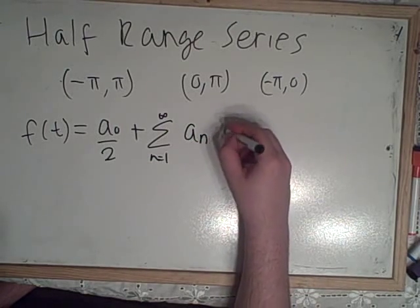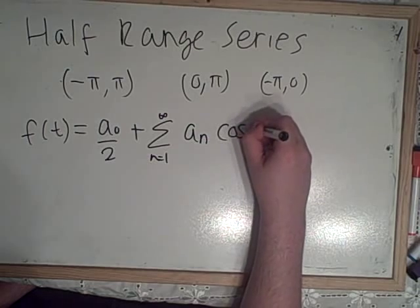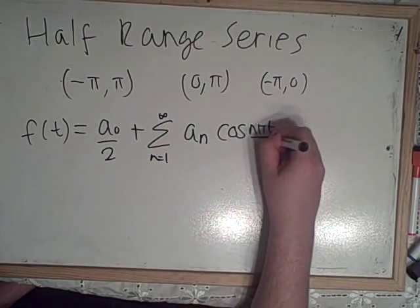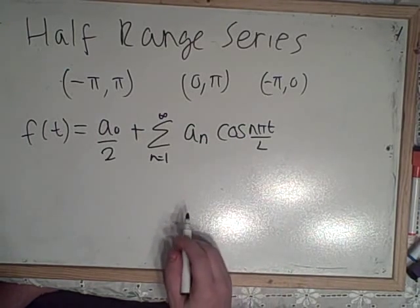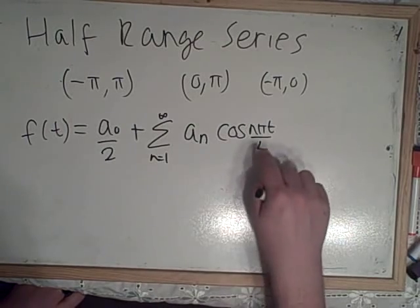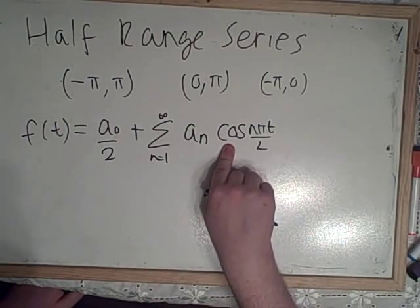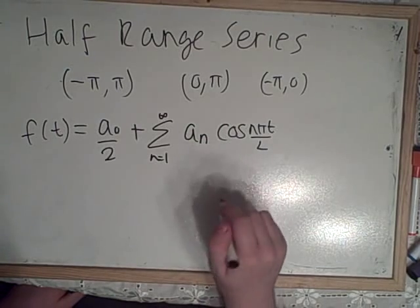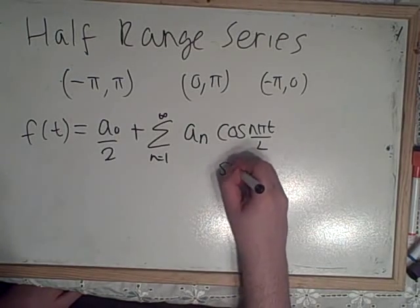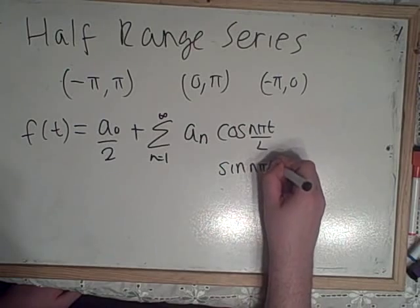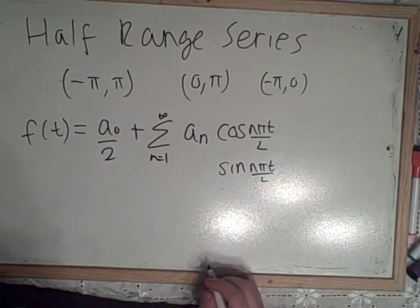And this is the part that changes. It can either be cosine n pi t over l—and this is if you're doing the half range cosine series—but if you're doing the half range sine series, it would just be sine n pi t over l.